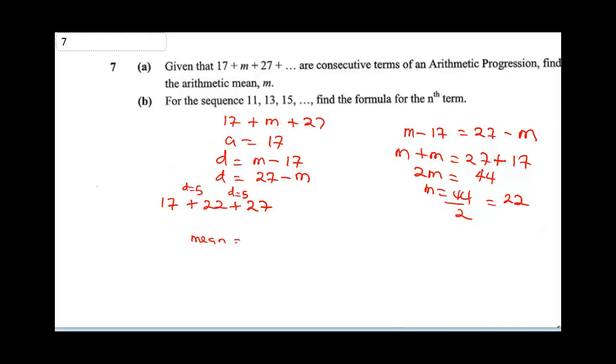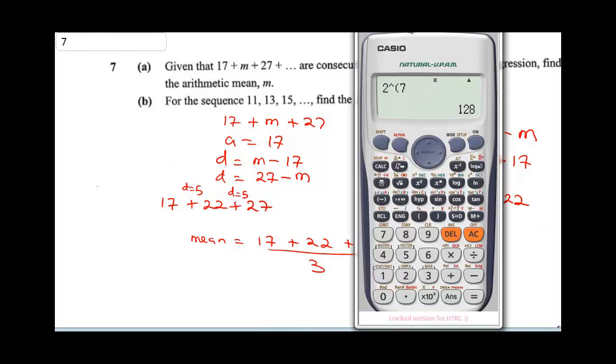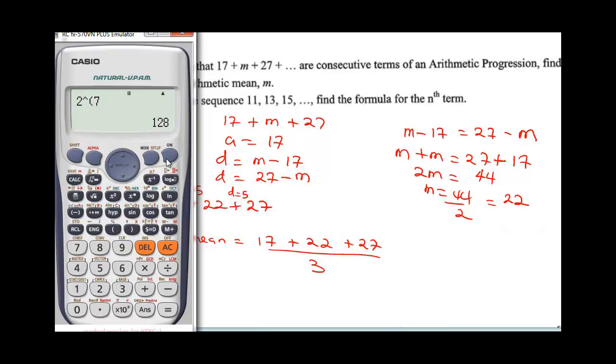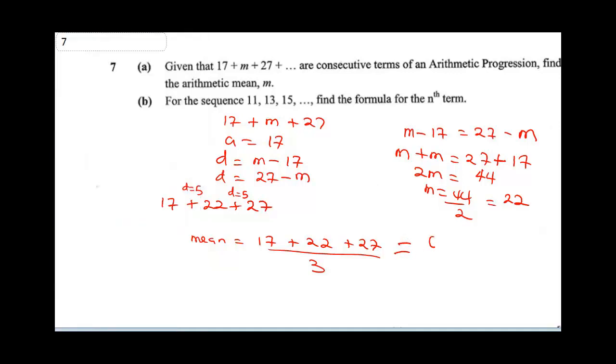The mean is going to be 17 plus 22 plus 27 divided by 3. So for us to get this, we're going to punch this on our calculator. This is going to be 17 plus 22 plus 27. This will give me 66, so this is going to give me 66 over 3. This is still going to give me 22. So the mean is 22.